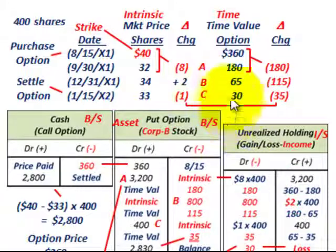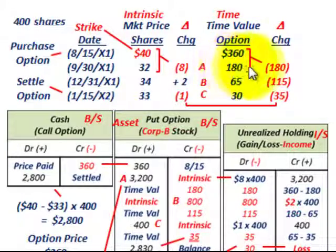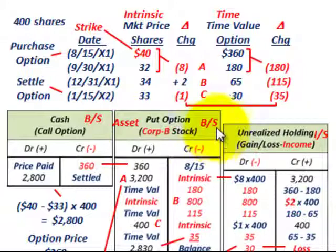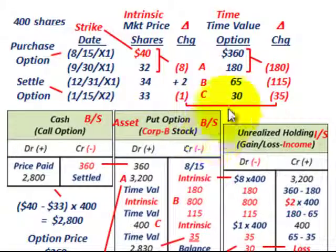The next thing we have to deal with is the time value portion. In this case, that decreased from $360 to $180, so we had a net change of $180. This is a negative change, and that's only a dollar amount — it doesn't affect the number of shares, just the option itself. So this would reduce the put option account — credit that for $180. You can see here that changes in our time value are going to reduce our put option account.